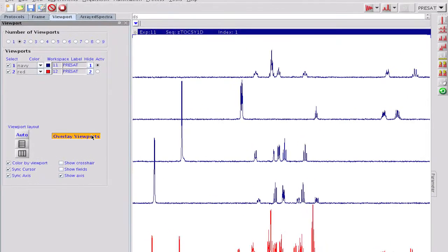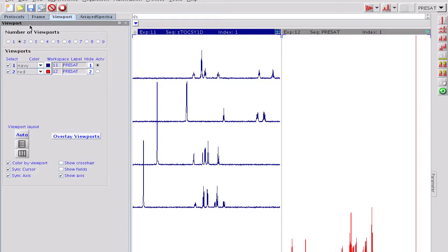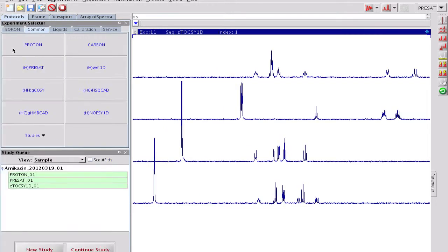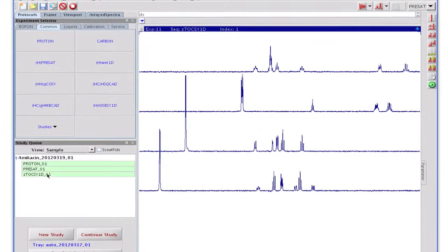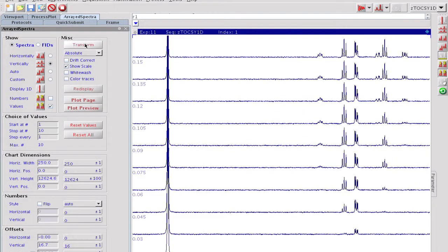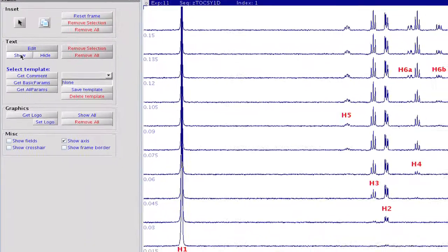During the setup procedure, we have seen that the mixing time can be arrayed. A selective 1D z-toxy experiment has been recorded with this option in advance, concentrating only on the low-field anomeric sugar proton at 5.5 ppm. We load this FID into the workspace and take a quick look at the results. As the mixing time increases, the magnetization relays further and further in the sugar ring. The order of signal appearance allows us to make unambiguous signal assignment within this ring.